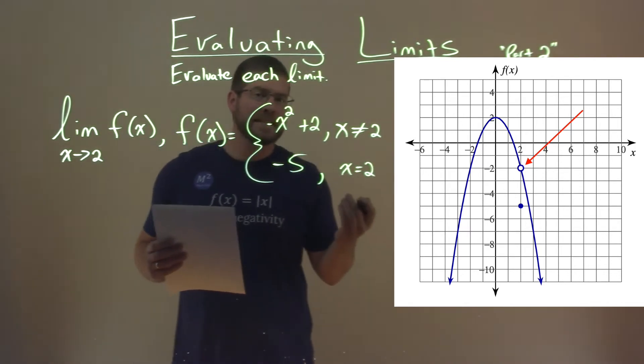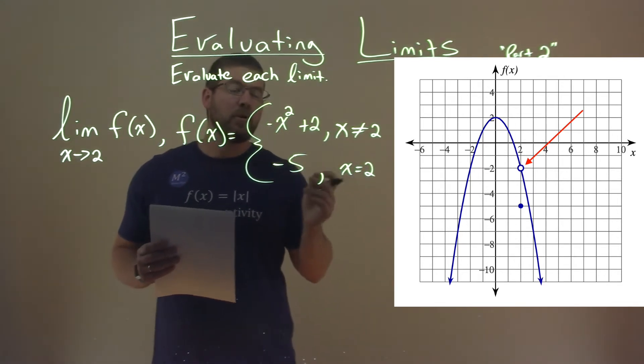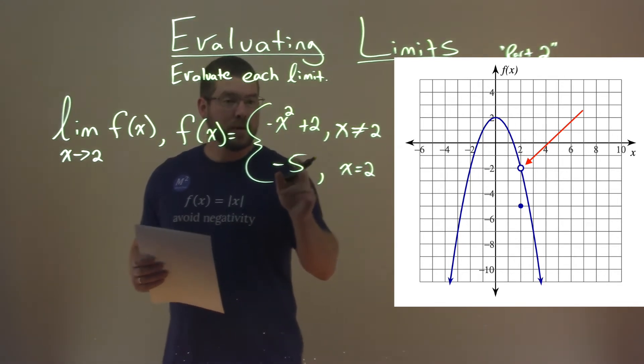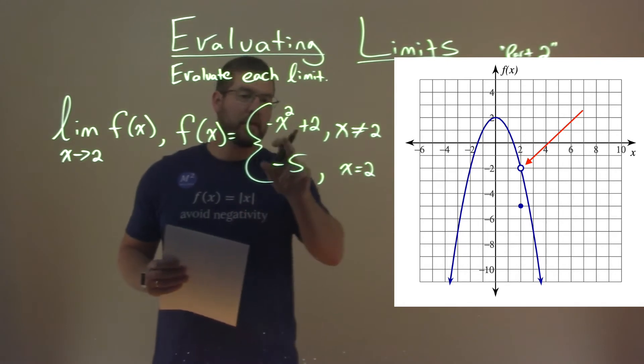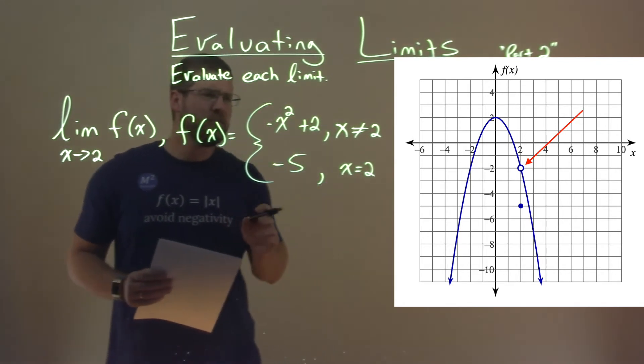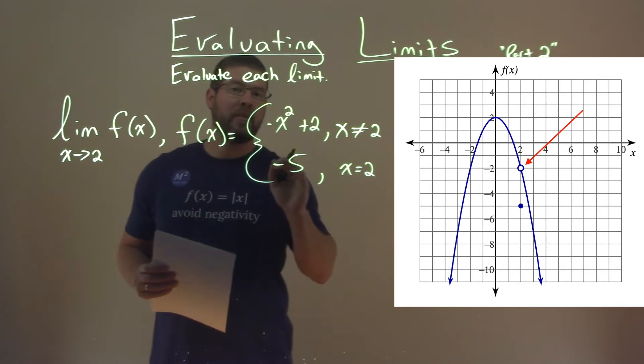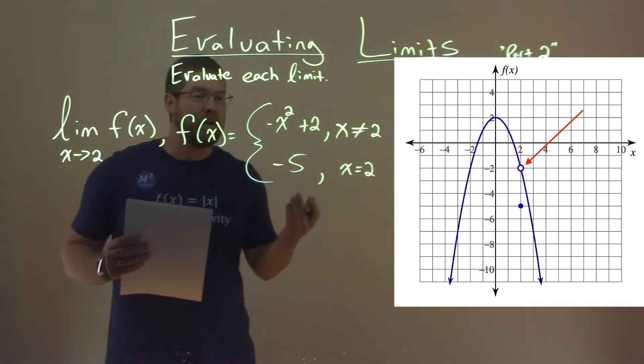And so with that graph, you can see that it's actually approaching the value that would be the first part of the equation, the negative x squared plus 2. And so we use this part to evaluate what happens at 2, and then that's going to be our limit where it's approaching.